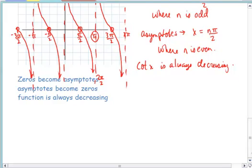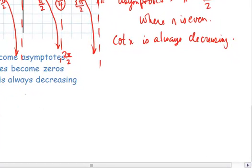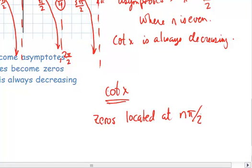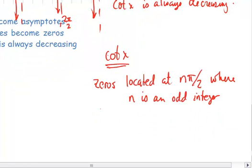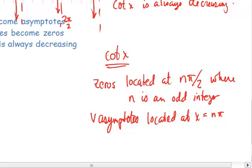Again, let me just reiterate, the zeros became asymptotes when you compare tangent to cotangent. Or, well, let me just reemphasize, for cotangent of x, the following properties are true. The zeros are located at n π over 2, where n is an odd integer. And the vertical asymptotes are located at x equals n π over 2, where n is even.